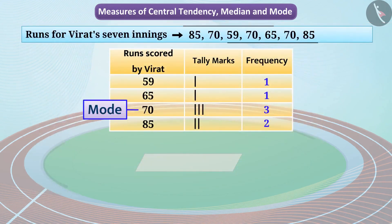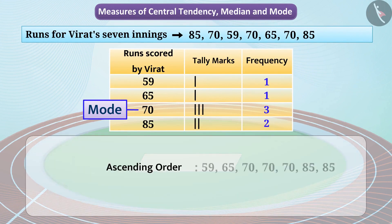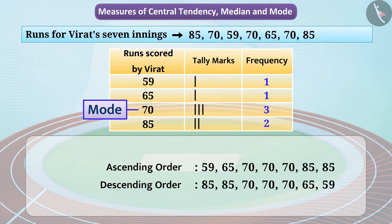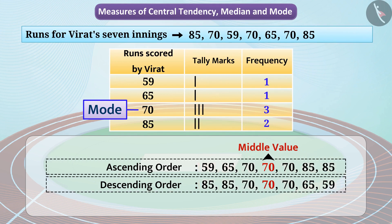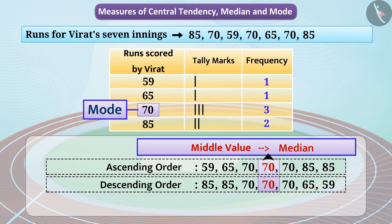If we arrange this group of runs in ascending or descending order, the mid value is 70. This value divides observations into two equal groups, each with three observations. When a range of data is arranged in ascending or descending order, the middle value is known as the median. In this case, the mode and the median are the same observation, however this may not always be the case.